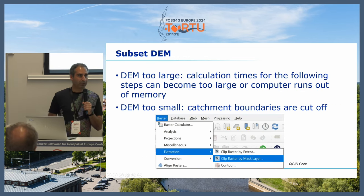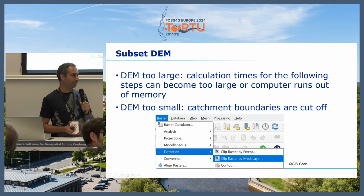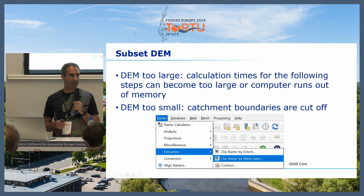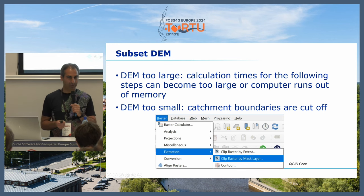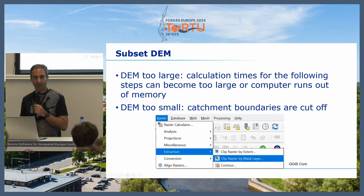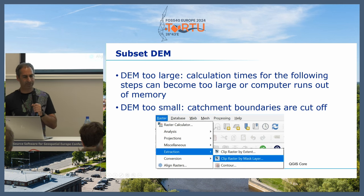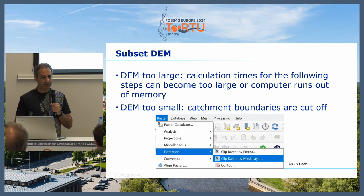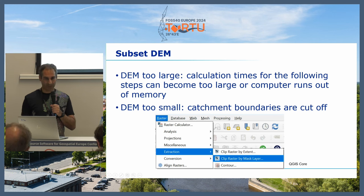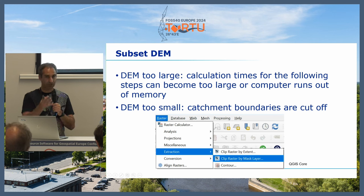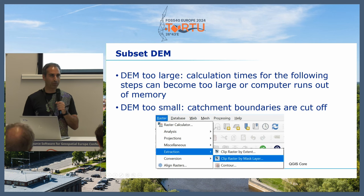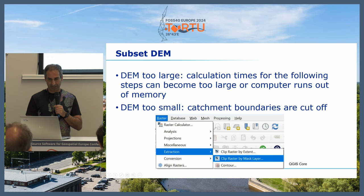Once you've downloaded your data, if you started with tiles, your study area is often not neatly within one tile but scattered over several. Then you need to clip it — in raster terminology we call that subset. You really need to do that because one of the next steps is quite calculation-intensive, so don't keep a very large DEM; clip it to what you as an expert see as the boundaries of your study area. If you make it too small, you'll get squared catchments because it stops at the boundary. So don't make it too big and don't make it too small.